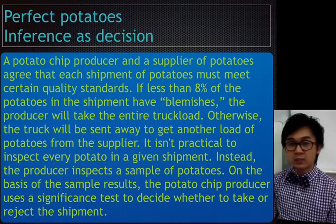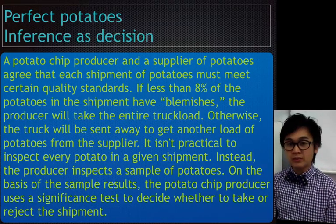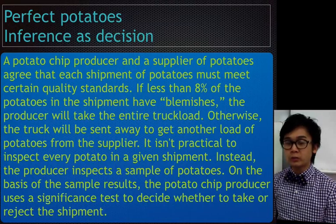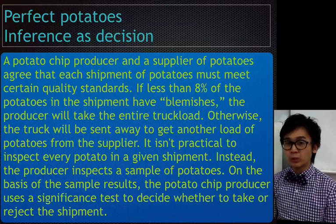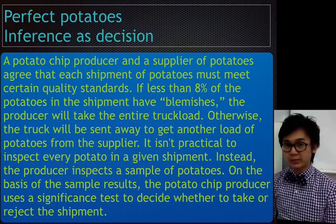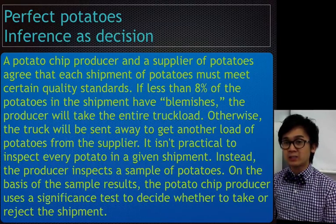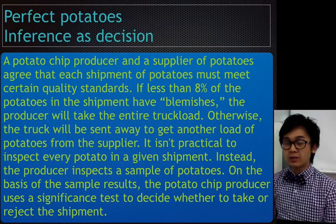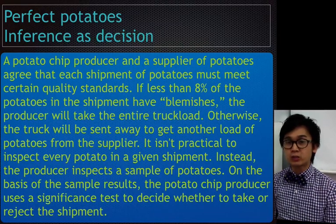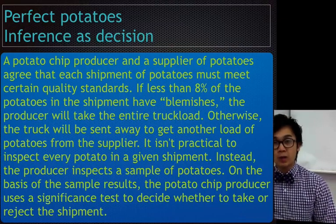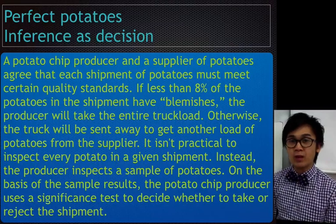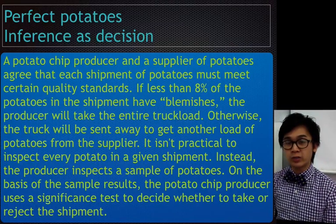In this hypothesis testing, we are going to reject the truckload of potatoes if the proportion is equal to 8%. Otherwise, if it's less than 8% of blemished potatoes in the truckload shipment, we are going to take the truckload for our production. Here's our hypothesis testing and examples of errors we might encounter.